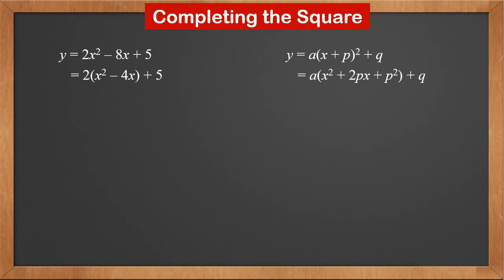If we expand (x + p)², we get x² + 2px + p². By comparing these two expressions, we find the coefficient of the x term, which is -4, is actually 2p. Therefore, p equals -2.